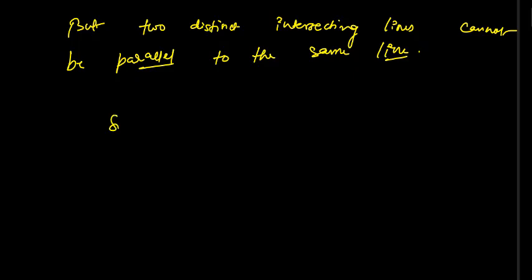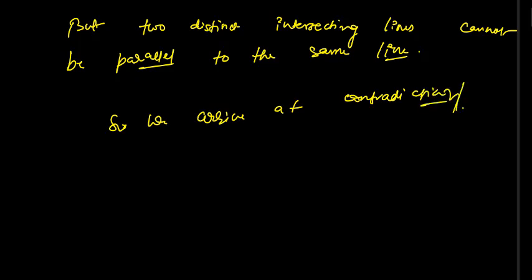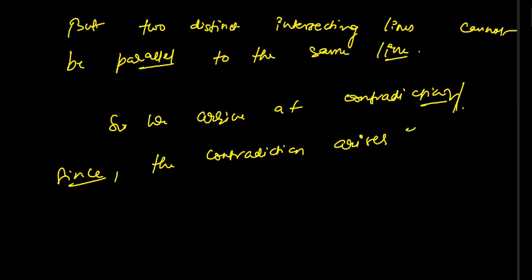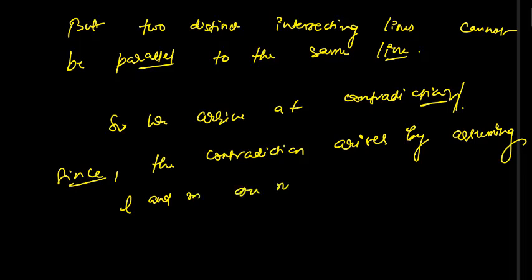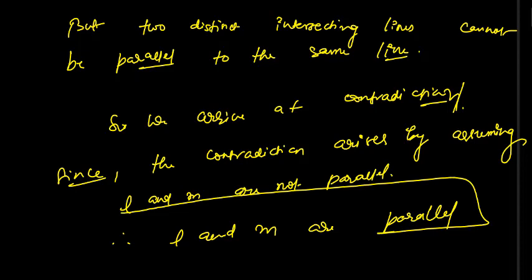So we arrive at a contradiction. The contradiction arises because of our assumption that L is not parallel to M. Therefore, L and M are parallel.